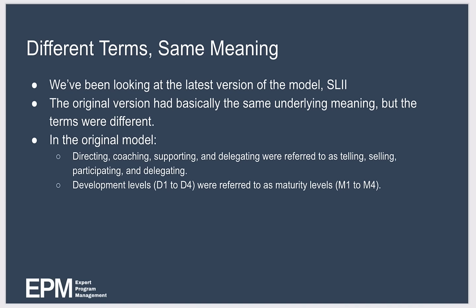One thing that can trip people up when investigating the situational leadership model is the different terminology they come across. In this video we've been looking at the latest version, called SL2, developed by Kenneth Blanchard. But the original version had the same underlying meaning with different terms. In the original model, directing, coaching, supporting, and delegating were referred to as telling, selling, participating, and delegating respectively. The development levels D1 to D4 were referred to as maturity levels, labelled M1 to M4. Whatever version or terminology you're using, the underlying meaning is basically the same.